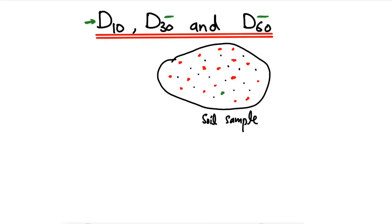We have green ones that are really bigger in diameter in the soil sample. So there are always different sizes of particles in the soil sample.